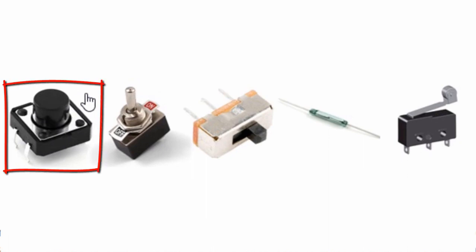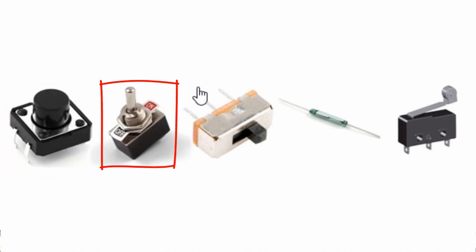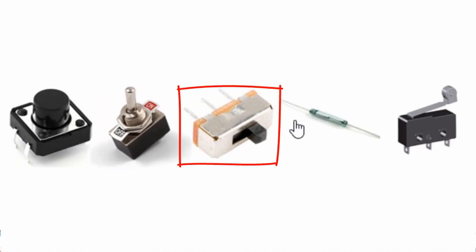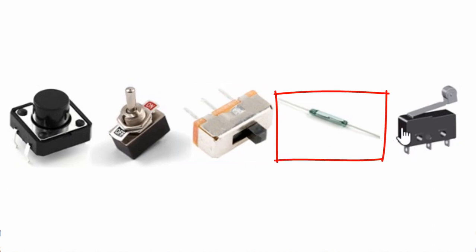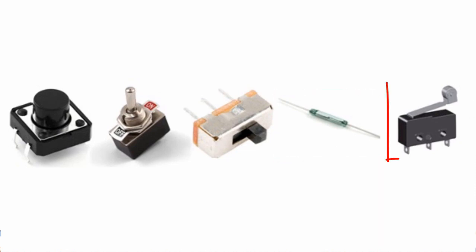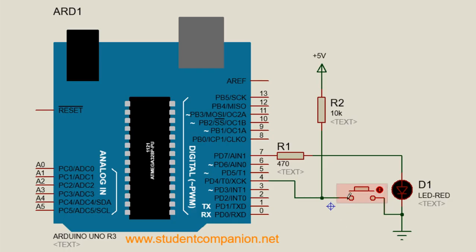Switches come in various forms for different purposes. This is a push button — it makes contact when pushed and breaks contact when released. This is a toggle switch — moving the lever back and forth opens and closes an electric circuit. This is a slide switch — moving the slider from one position to another closes or opens the electric contact. This is a reed switch, a magnetically actuated switch — when exposed to a magnetic field, two ferrous metals inside pull together and close the connection; in the absence of a magnetic field the switch opens. And this is a limit switch — when an object comes into contact with the actuator, the device makes or breaks an electric connection.